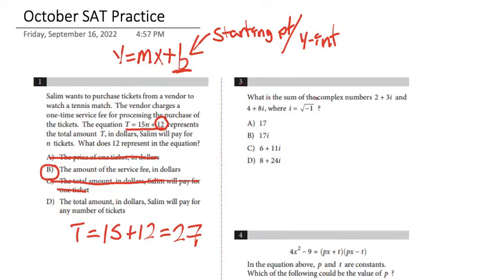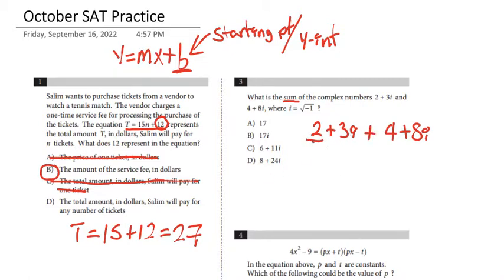For number 3, what is the sum of the complex numbers two plus three i and four plus eight i? The key word here is sum — we're looking for the sum of these two complex numbers, which means we're going to add them together. When adding complex numbers, the real numbers go together: two plus four is six. And then the imaginary terms go together: three i plus eight i is 11i. The answer is answer choice C.